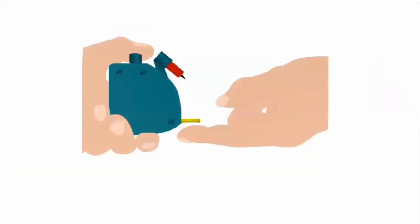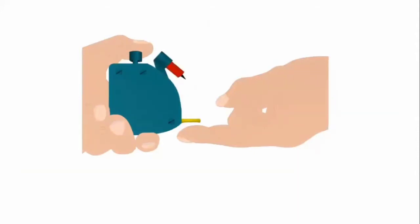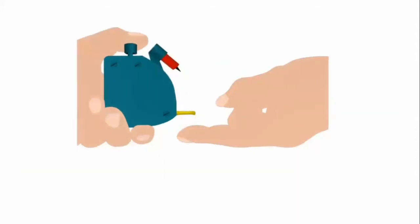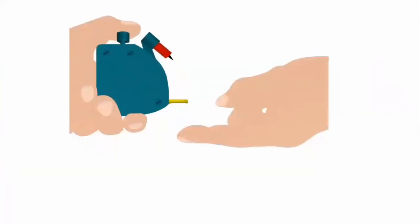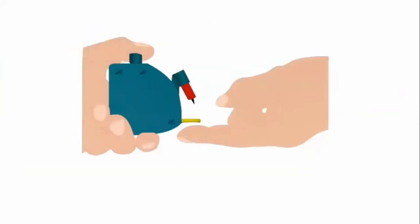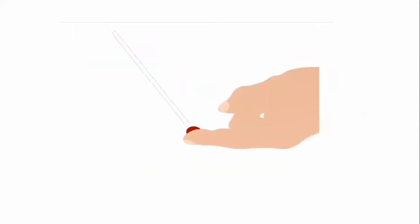First, the fingertip is cleaned with the spirit swab to avoid infection. Then a prick is made with the lancet. As soon as the prick is made, bleeding will start from the fingertip. When bleeding starts, start the stopwatch. After the stopwatch starts, the capillary tube is placed at the bleeding site.